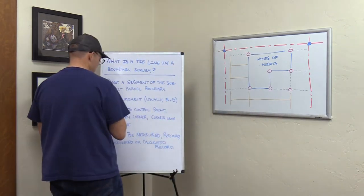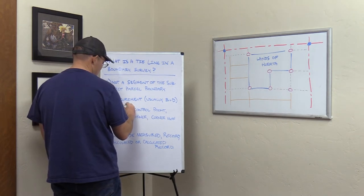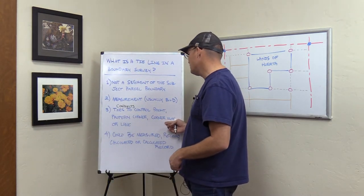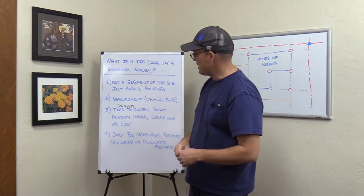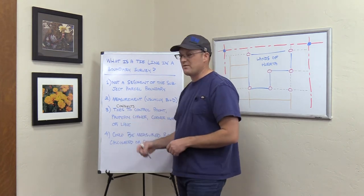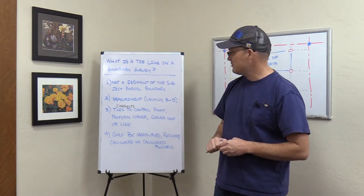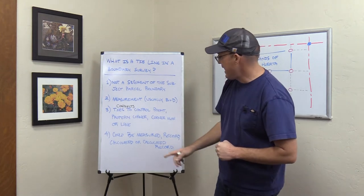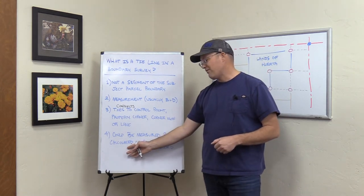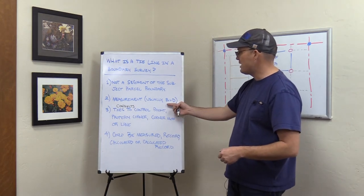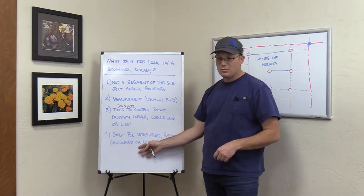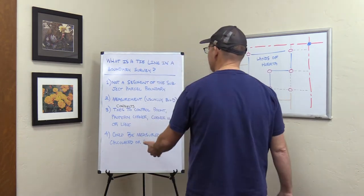The line connects — or ties to — control points, property corners, corner monuments, or surveyed lines. A tie line ties at least two of those things together. And then number four, it could have a measured value, a record value, a calculated value, or a value calculated from record. So the bearing and distance could be measured, record, calculated, or calculated from record. We use all four of those in my shop.